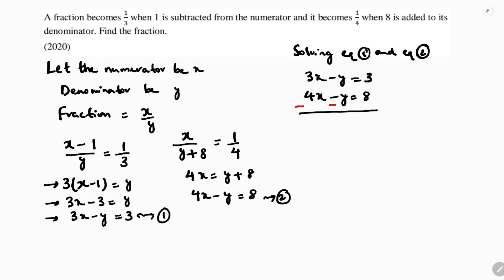So 3x minus 4x is minus 1x. Minus minus y plus y will get cancelled. 3 minus 8 is minus 5. Minus minus cancel. So the value of x is 5.